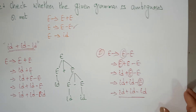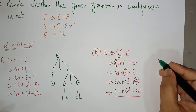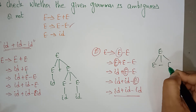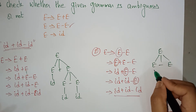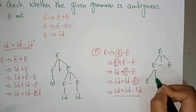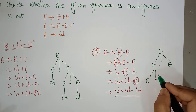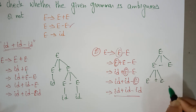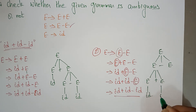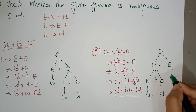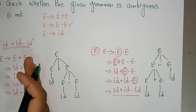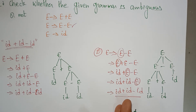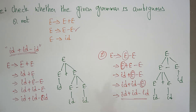I can represent it in a diagram like this. First e, e minus e. This e again I replaced with e plus e. And this is id, id, id. The same string is represented in two ways.